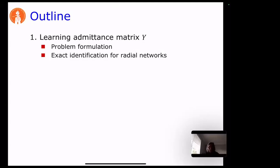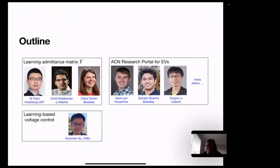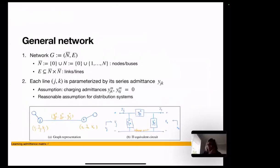I'll try to go slowly because I was quite surprised when we had this result. This is the work of Li Wei, who was a postdoc at Caltech a few years ago, along with collaborators at the University of Alberta and Claire Thomas at Berkeley. So, the model: a network is simply a graph G, with a set of nodes or buses given by the set of links or lines E. Each line is parameterized by a series admittance — a single-phase model where we assume the shunt admittances are zero, which is a reasonable assumption for distribution networks.